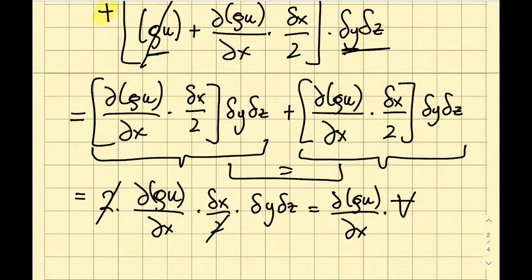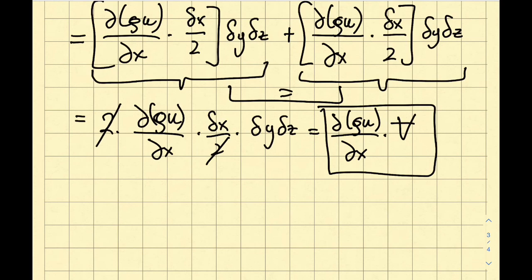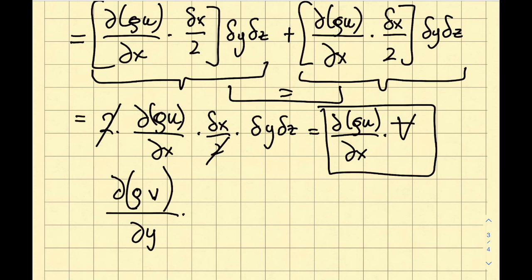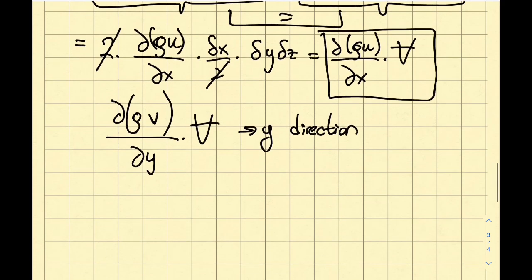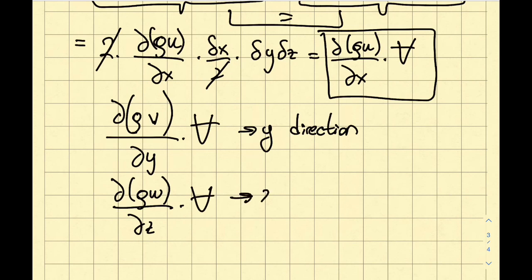By symmetry, the same analysis in the y-direction yields ∂(ρv)/∂y times Volume, and in the z-direction yields ∂(ρw)/∂z times Volume.